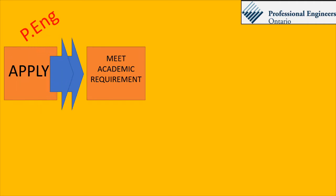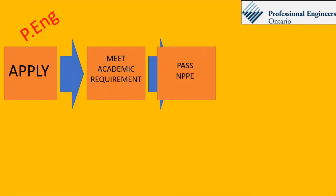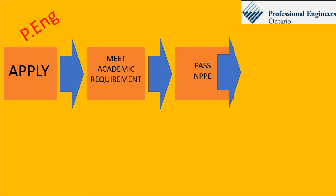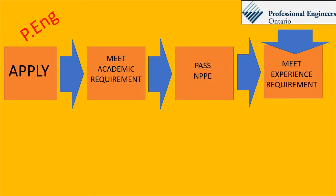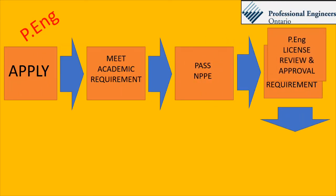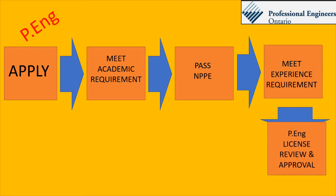As shown in the flowchart, the process has five steps. First, you have to apply. Then meet the academic requirements. Then pass the National Professional Practice Exam, which is also called the law and ethics exam. Then you have to meet the experience requirements. After you submit, the experience will be verified and your references checked. After this, you will be granted a license.